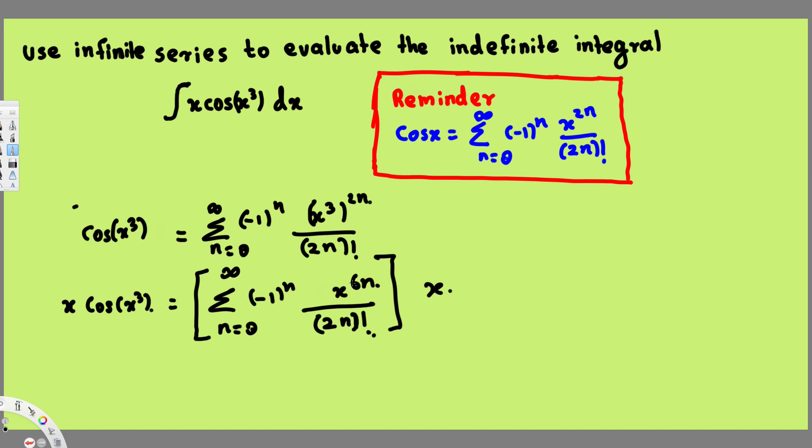And if you see, we have x^(6n) already. And if you multiply this one, this is going to add to this power. So that's going to give us 6n + 1.